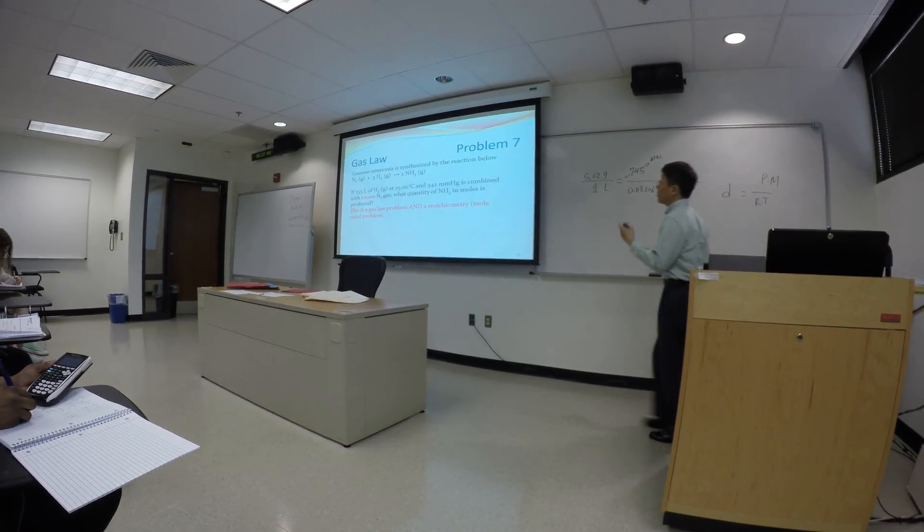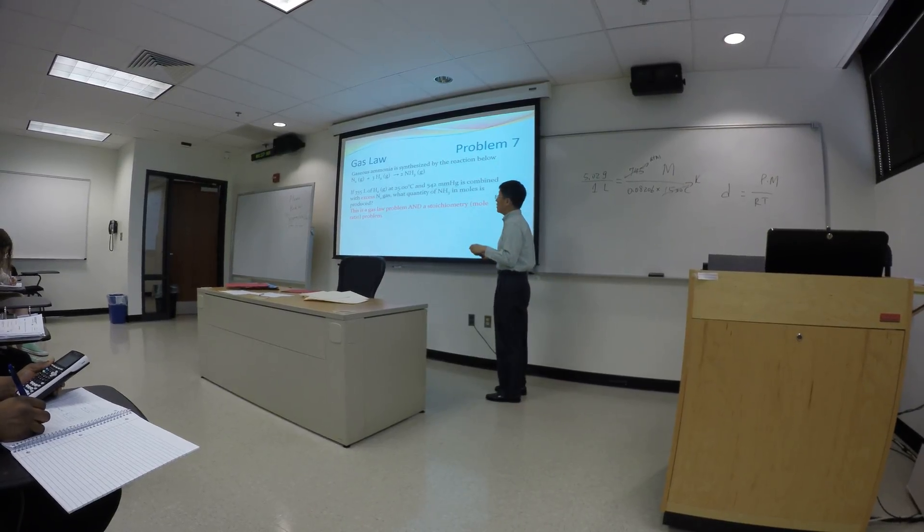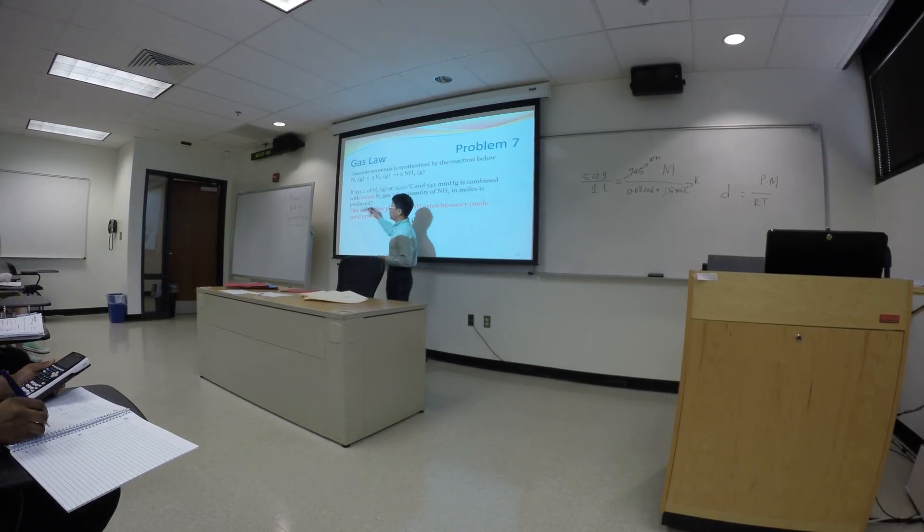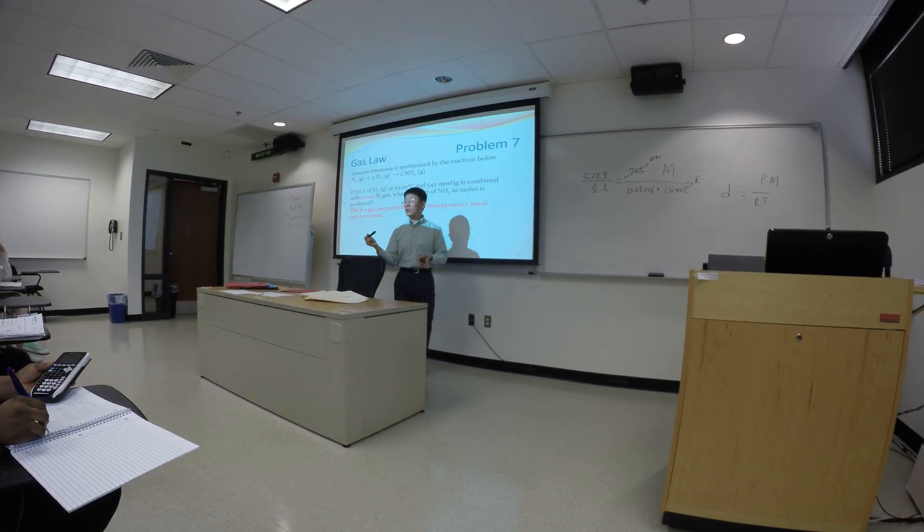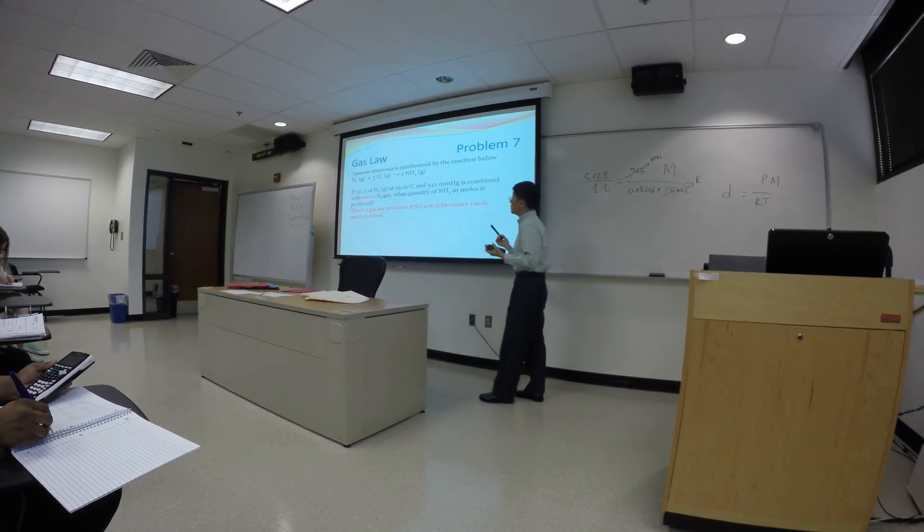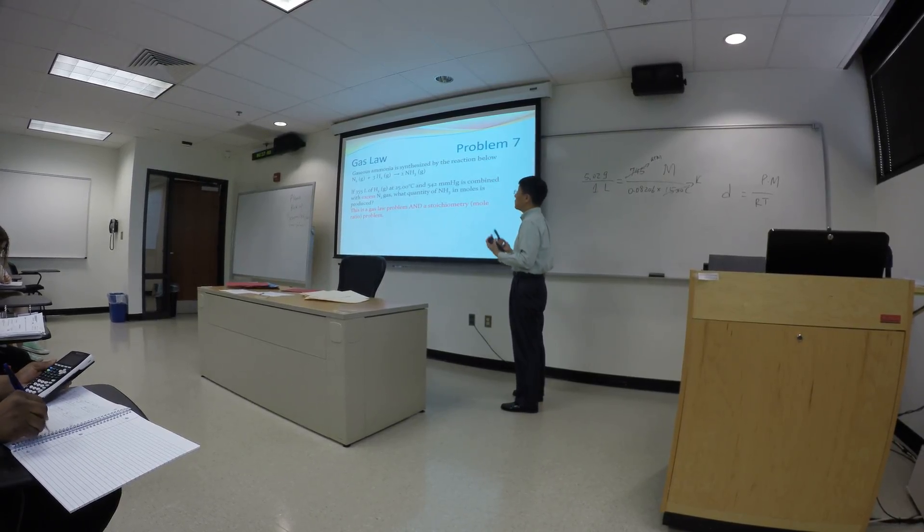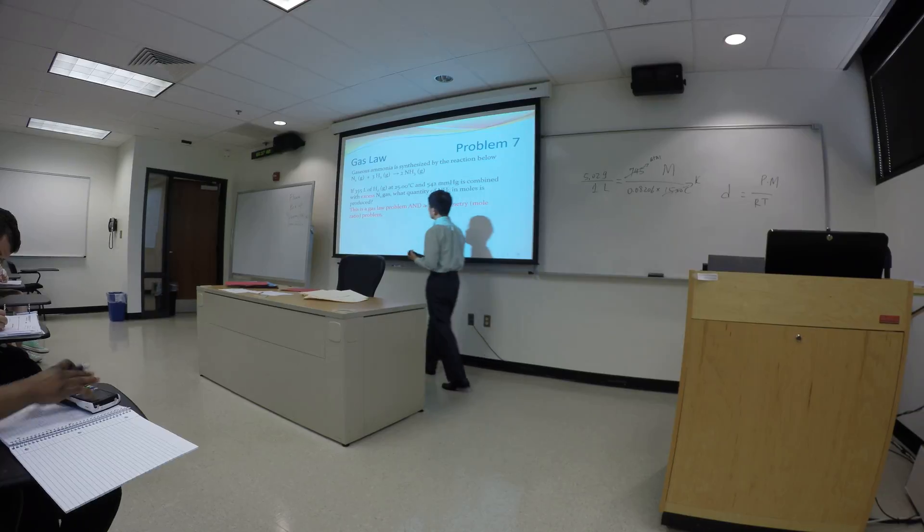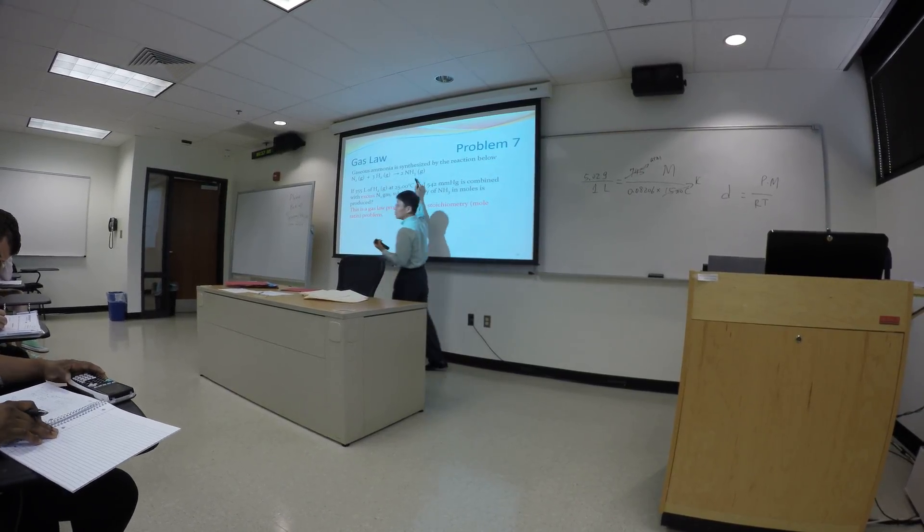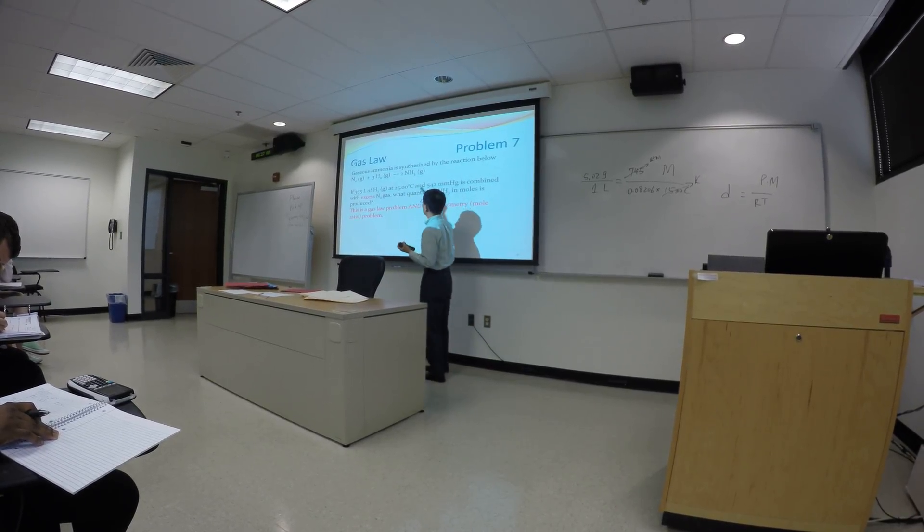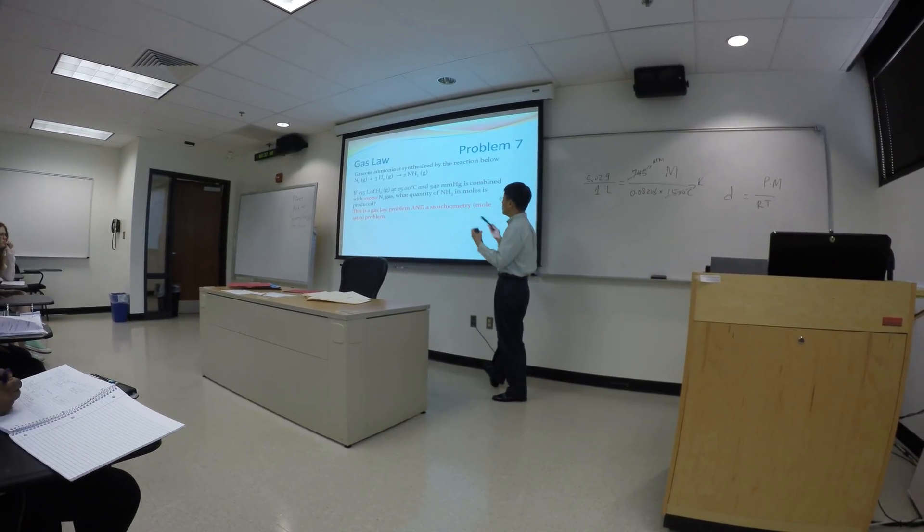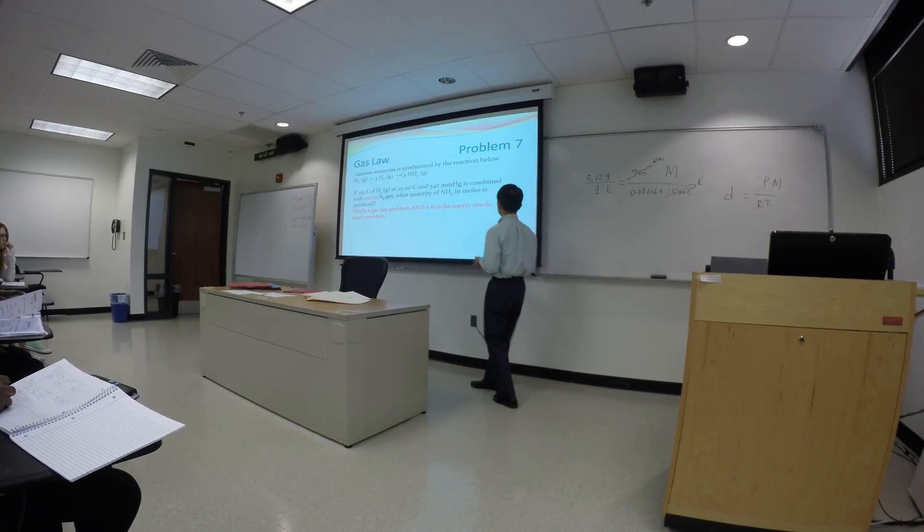So you have to figure out, 355 liter of hydrogen gas is equivalent to how many moles. There are different ways to do this question. If you use PV equals NRT, N equals to PV over RT. So pressure and volume are given. R is a given constant. Temperature is given. So you can figure out the number of moles. And if you figure out the number of moles of hydrogen, every three moles of hydrogen gas will give you two moles of ammonia. So that two to three molar ratio is the conversion factor to convert the number of moles of hydrogen gas into the number of moles of ammonia.